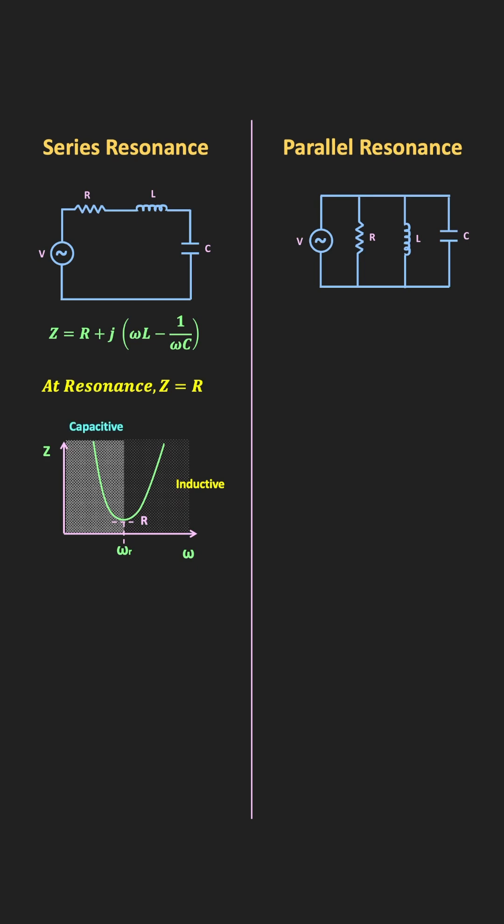In this series RLC circuit, at resonance, since the impedance is minimum, the current in the circuit will be maximum. If we see the current versus frequency curve, this is how it will look like. And this is the expression of the resonant frequency.